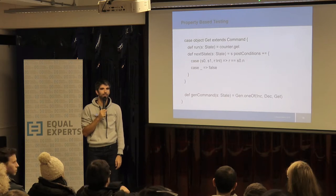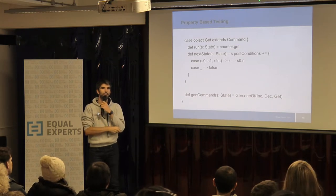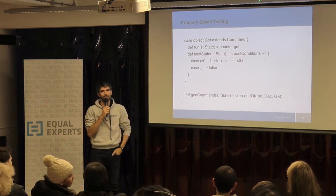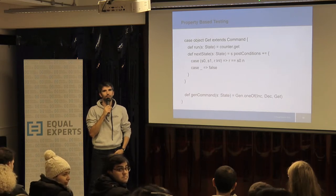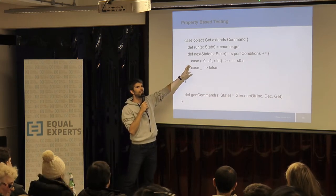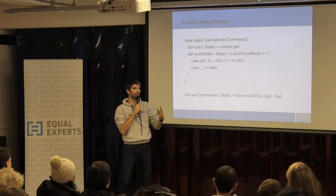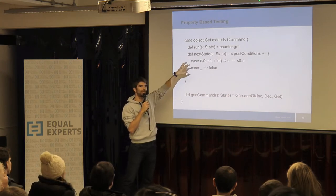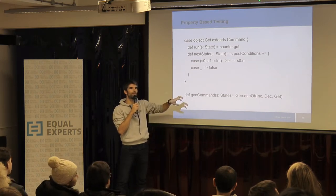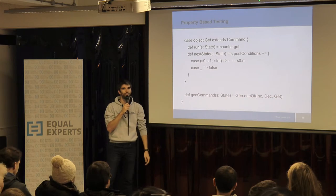How would you test state bleeding between two sessions — for example, where one session's increments accidentally come over to another session? That gets a little bit more complicated. You can test one session first, and then test with two sessions. You have to maintain two instances of state, and then rewrite the components to make sure that the state of the two never gets out of sync with what you expect.